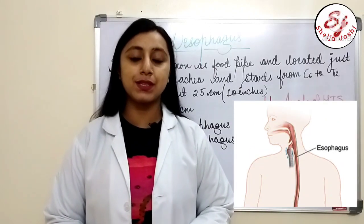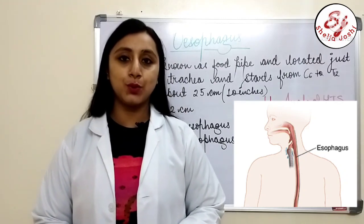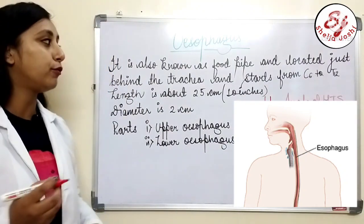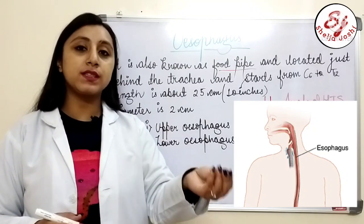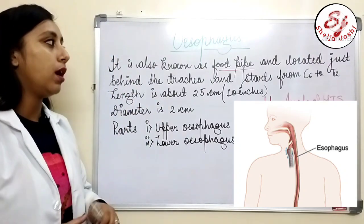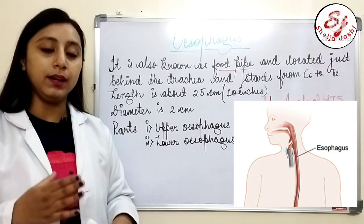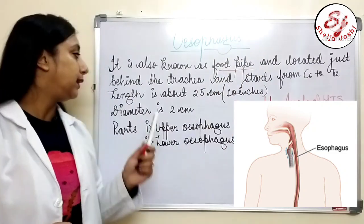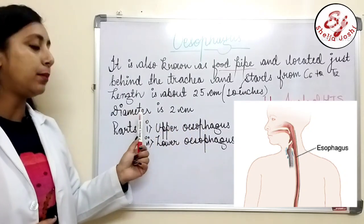This is part 2 of the digestive system. The esophagus is also known as the food pipe. It is located just behind the trachea, which is also known as the wind pipe. It starts from cervical 6 vertebra to the 12th thoracic vertebra. The length is about 25 cm, or 10 inches, and the diameter is about 2 cm.